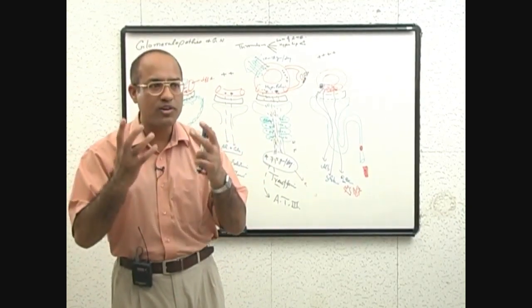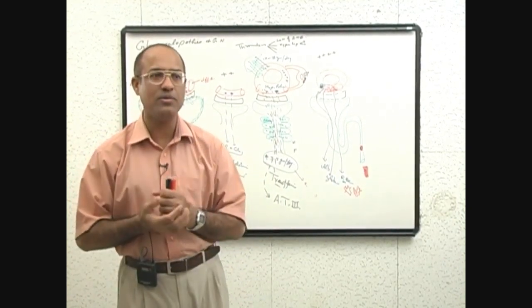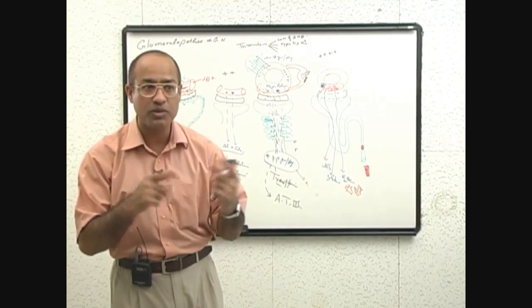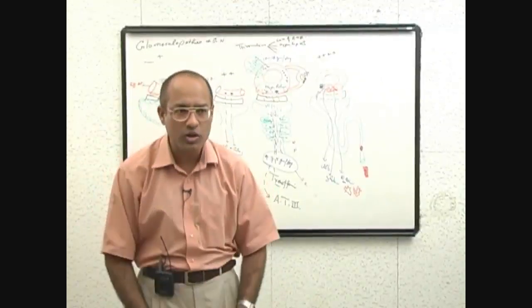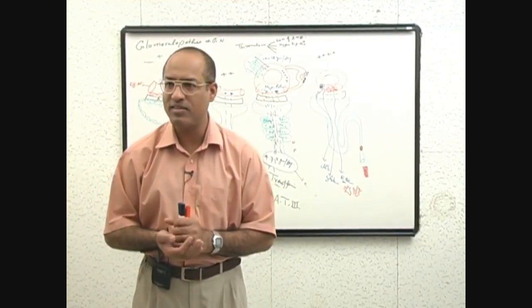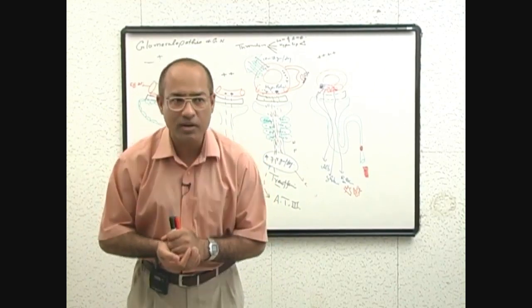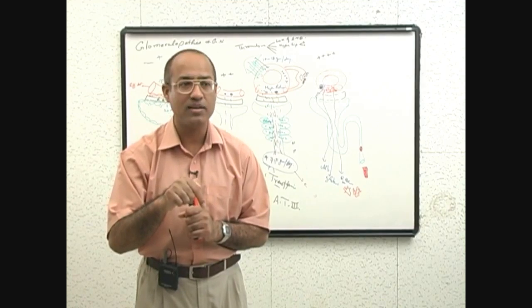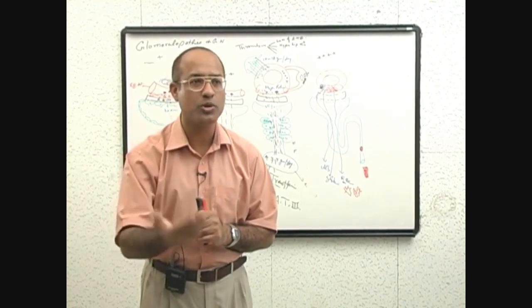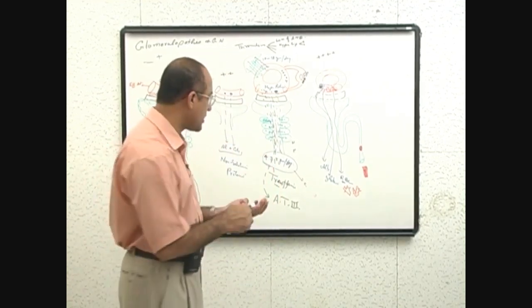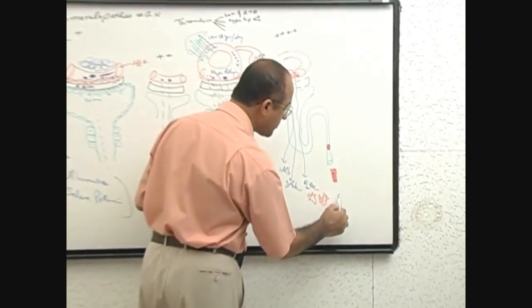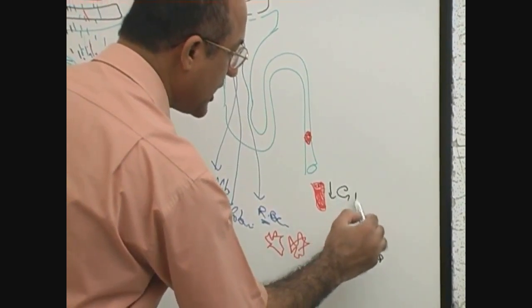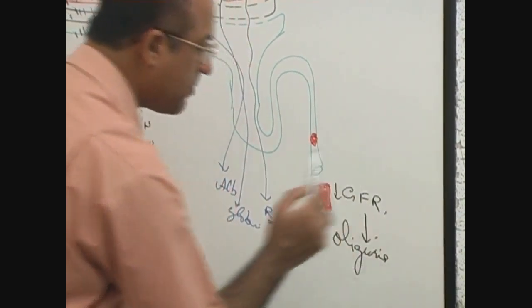When glomerular filtration starts going down, now here the difference from nephrotic patient. The glomerular filtration in this patient is going down. So total urine formation will be less. And when urine formation per 24 hours is less than 400 ml, we say the patient has oliguria. So these patients along with this develop oliguria due to reduced GFR.